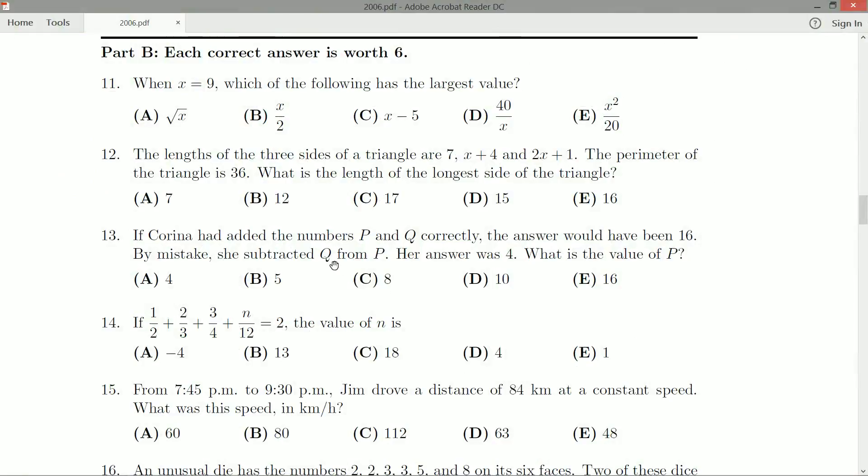If Karina had added the numbers P and Q correctly, the answer would have been 16. By mistake, she subtracted Q from P. Her answer was 4. What is the value of P?